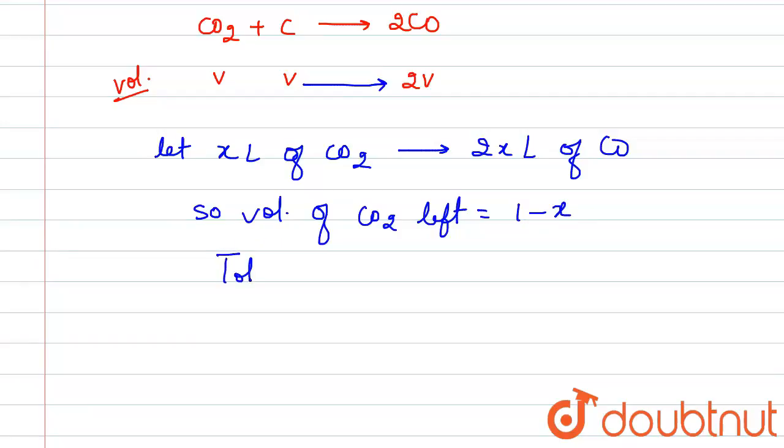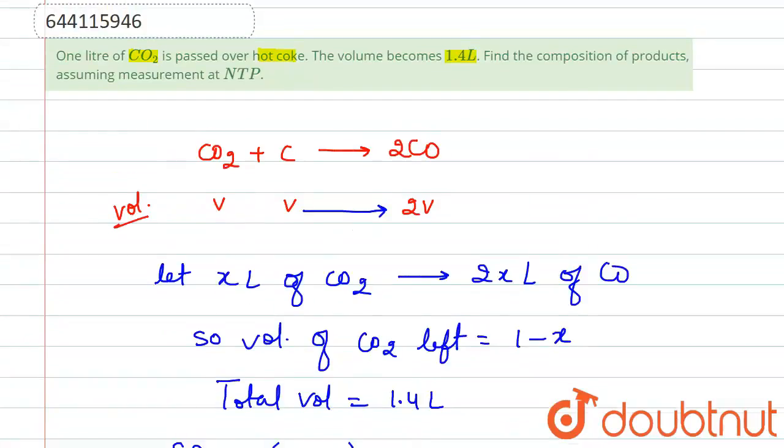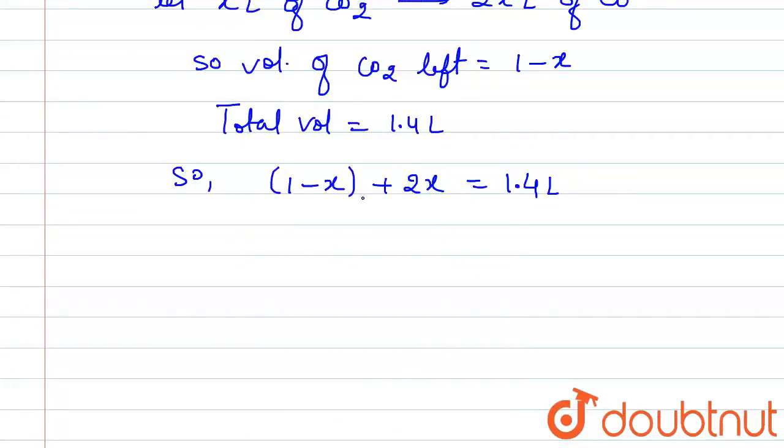So if we write: 1 minus x plus 2x, and this equals the reactant volume equals product volume, that is 1.4 liter. That is total volume. Now if we calculate the value of x from here: